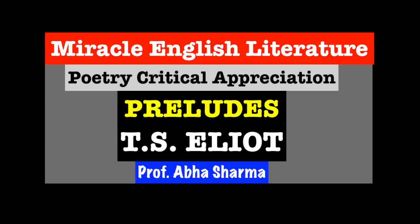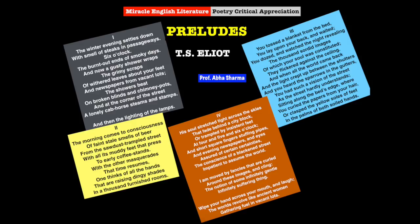Eliot, the Nobel Prize winner, was a contemporary of Auden and is often known as the group leader of the new critics and the Aristotelians. His major modernist work is The Wasteland. Today we will do Preludes, which was written during 1910 or 1911, but was published in the volume with Prufrock and Other Observations in 1917.